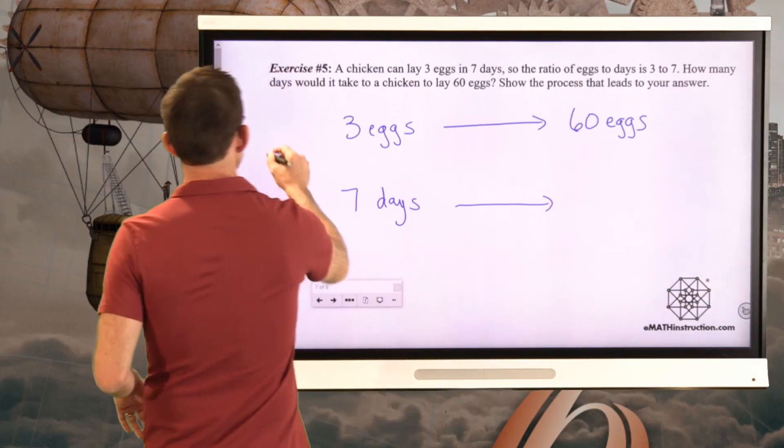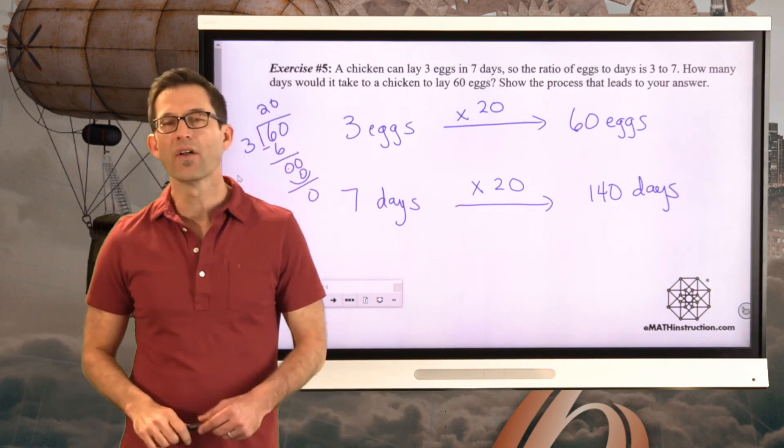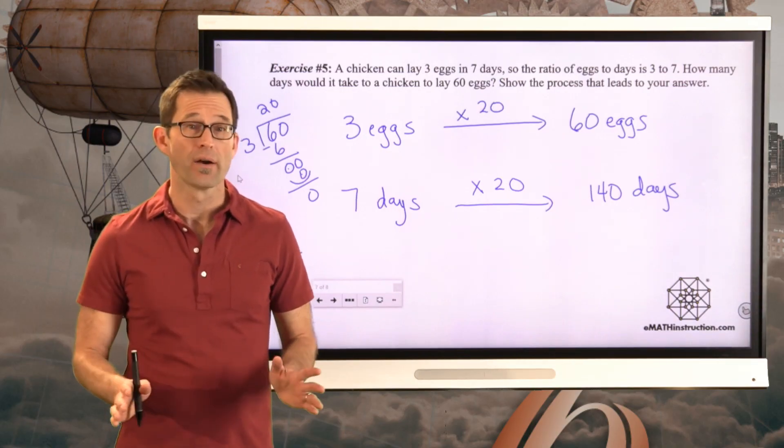But if that's not obvious, then of course you'd want to go over here and take 60 and divide it by three. And again, certainly if it's obvious, you don't have to, but you'd get times 20. But then that means we have to scale this by 20. And again, if it's obvious to you that seven times 20 is 140, great. If it's not obvious, then you just take 20, multiply by seven over here and get that 140. So it's going to take 140 days to lay 60 eggs and one tired chicken, or at least a tired hen.